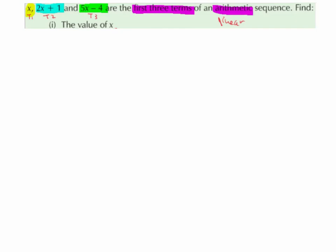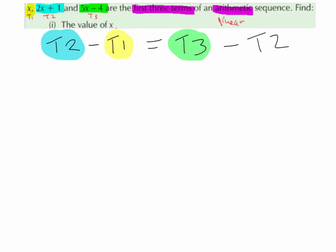Okay, so we don't actually know what the difference between each term is in this case, but we do know that whatever the difference is, it is the same each time. So the difference between term 1 and term 2 will be equal to the difference between term 2 and term 3. So, if we write that out, term 2 minus term 1 must be equal to term 3 minus term 2. So now, since we've basically set up a formula, all we have to do is substitute into our formula.